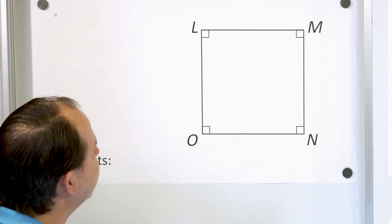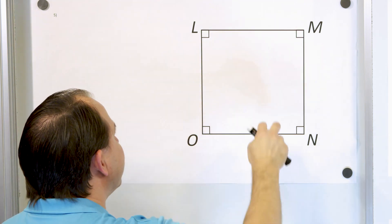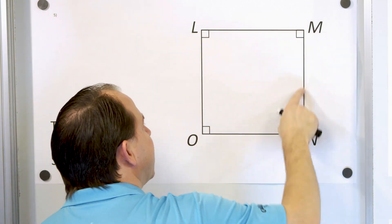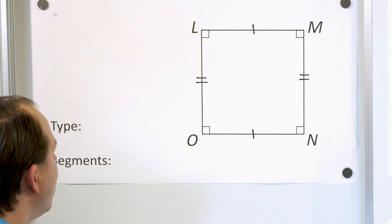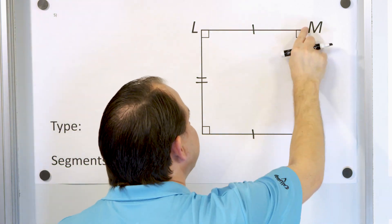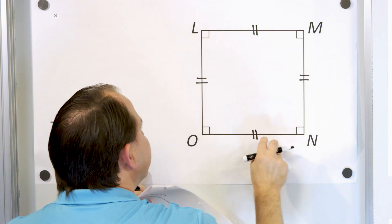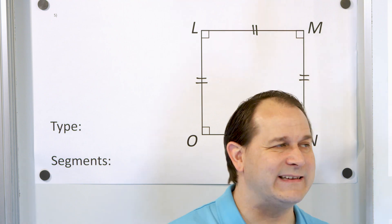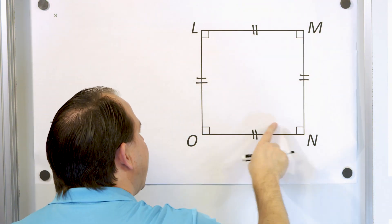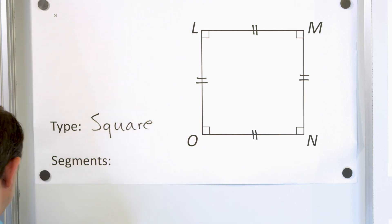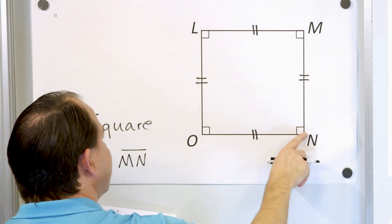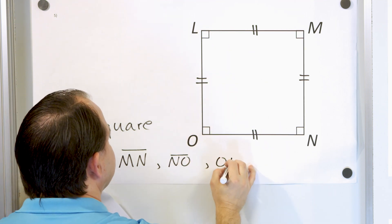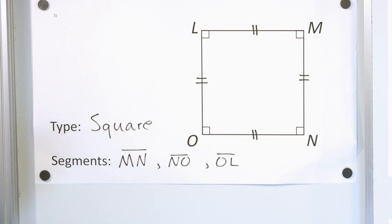Here's the next problem. What type of shape is this? Well, we have parallel sides on all sides, and it appears that all four sides are the same length. If you wanted to mark and show that, you would put congruency marks on all sides — that means all four sides are exactly the same length. Four sides exactly the same length, four 90-degree angles in the corner — we call this a square. Name all segments congruent to LM: we have MN, NO, and OL. All of them are congruent to segment LM because they're all the same equal length.